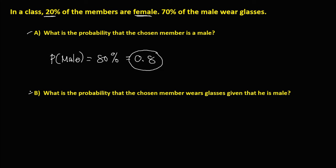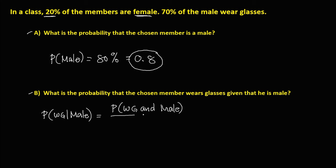For part B, what is the probability that the chosen member wears glasses given that he is a male? We can rewrite this as the probability of wears glasses and a male over the probability of a male. In the problem, we have 70% of the male wear glasses.